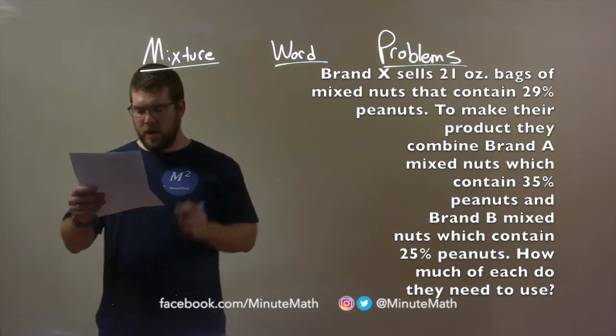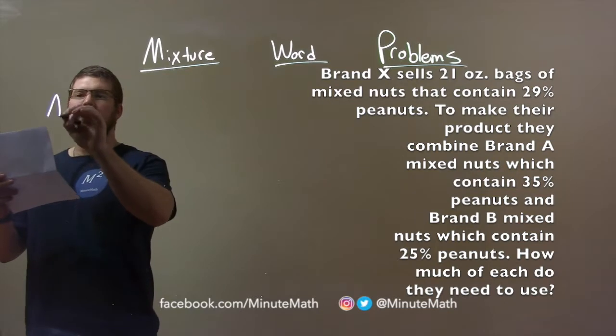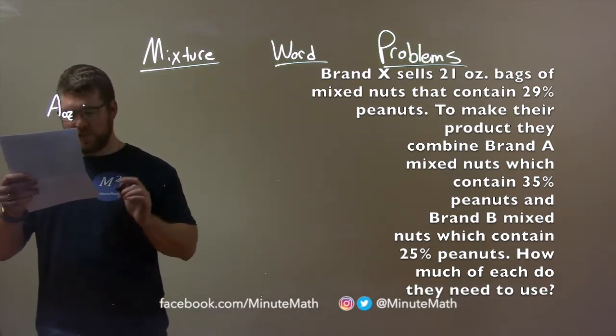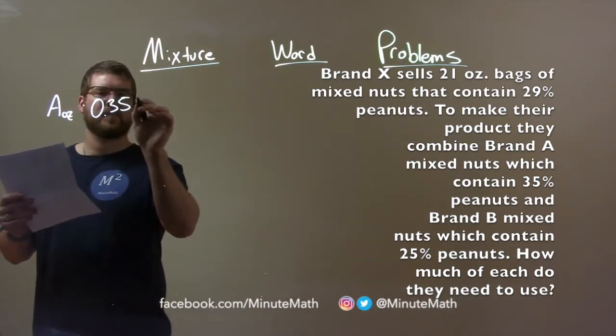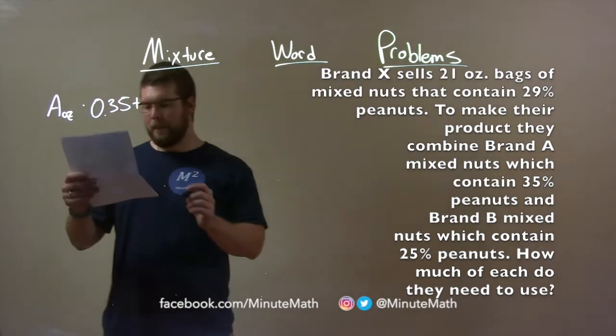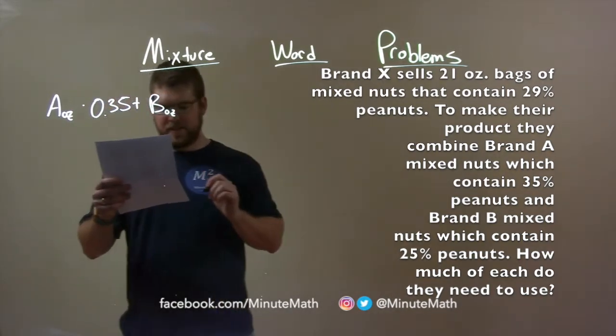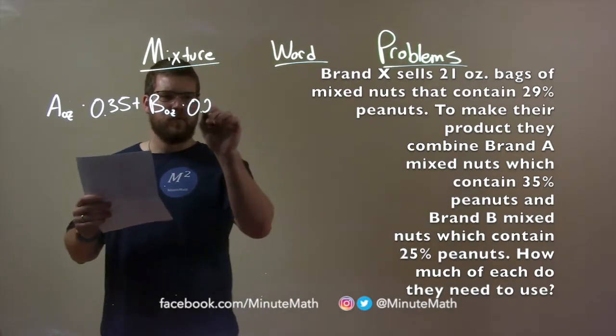So, first thing, we have Brand A in ounces, contains 35% peanuts. So, multiply as a decimal, 0.35. When we combine that with Brand B ounces, which we don't know, but that contains 25% peanuts. So, that is a decimal, 0.25.